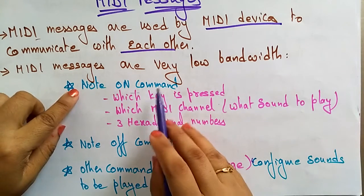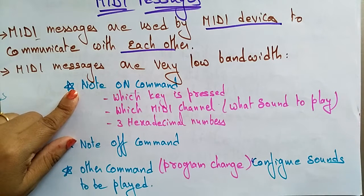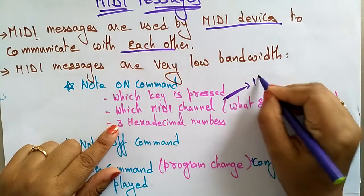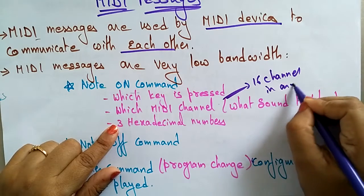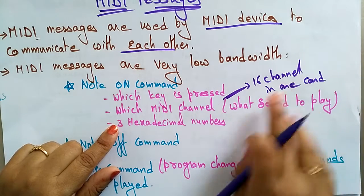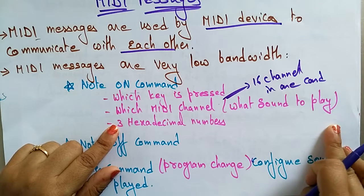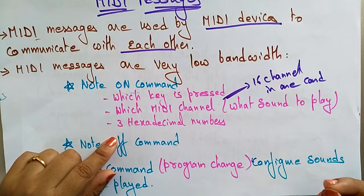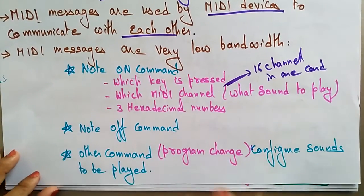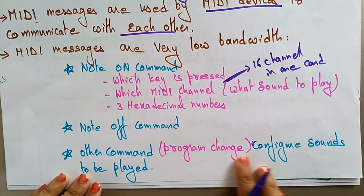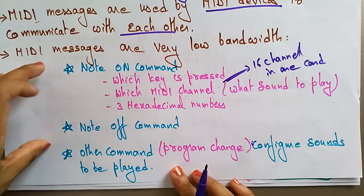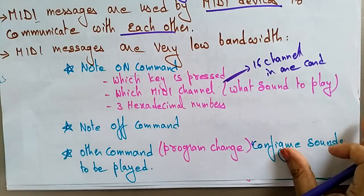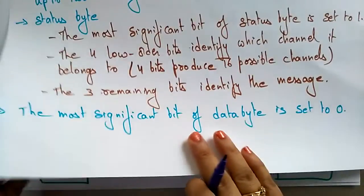MIDI messages include commands like Note On, Note Off, and others. The Note On command specifies which key has to be pressed and which MIDI channel has to be selected. There are 16 channels in one card, and each channel defines what sound is to be played, represented by three hexadecimal numbers. The Note Off command and the Program Change command configure the sounds to be played.